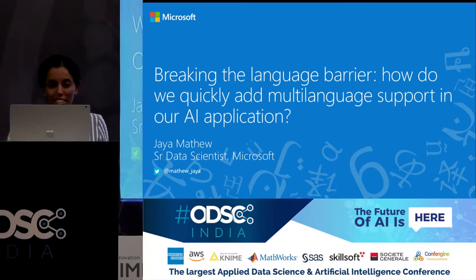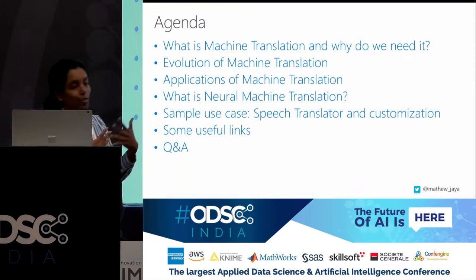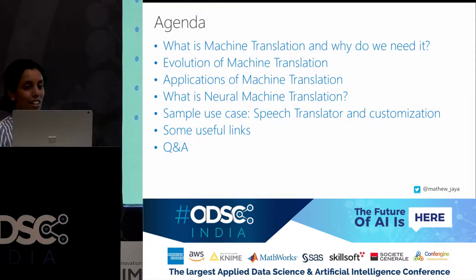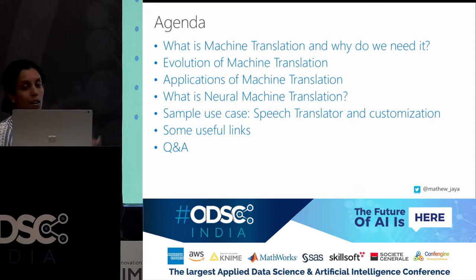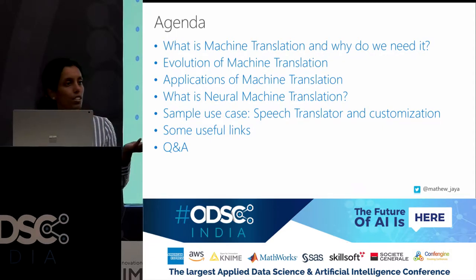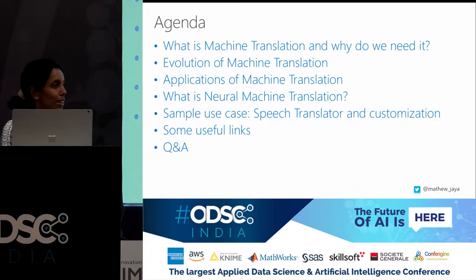So let's quickly look at the agenda. Before we get into how it gets done, it might be useful to have one slide introducing the topic of machine translation — why do we need it, a short description of the evolution and applications, and then we'll focus on neural machine translation, which is where most of the work and research is happening right now.